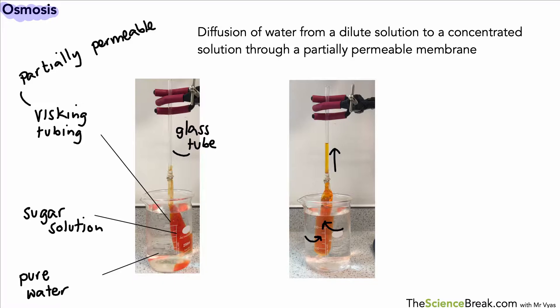This is because of the idea of osmosis. This is the definition of osmosis: it's the diffusion of water from a dilute solution—and by dilute we mean a solution that has lots of water in it, so it's a watery solution—to a concentrated solution. A concentrated solution will have more solute dissolved in it, and this all happens through a partially permeable membrane.